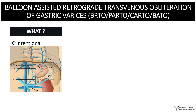The gastric varices will have outflow most commonly through the gastro-renal shunt into the left renal vein and further into the IVC. They can also drain directly into the IVC, forming the gastro-caval shunt. The distal branches of the inferior phrenic vein can anastomose with the pericardiophrenic veins, and retroperitoneal or lumbar veins can also lead to systemic outflow.